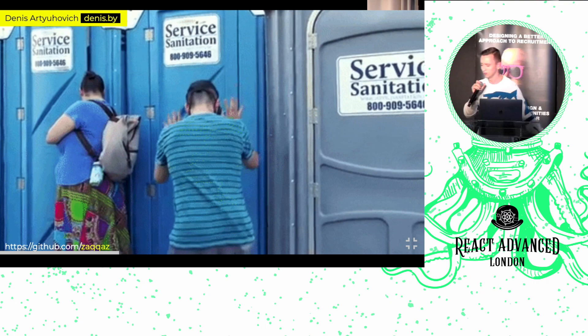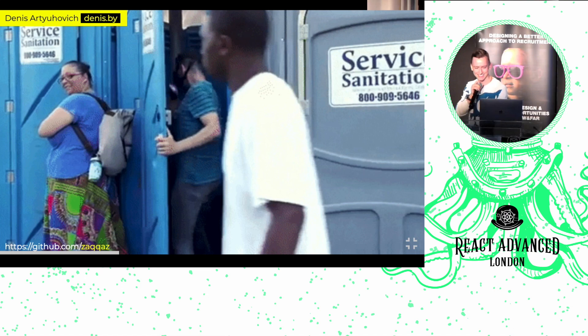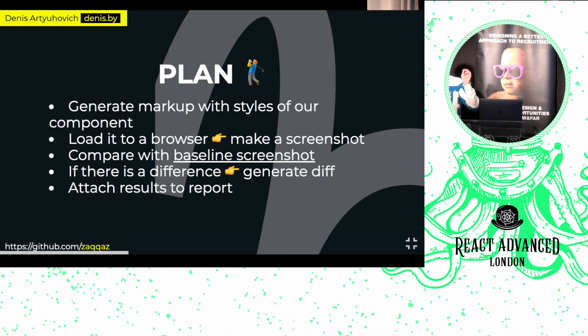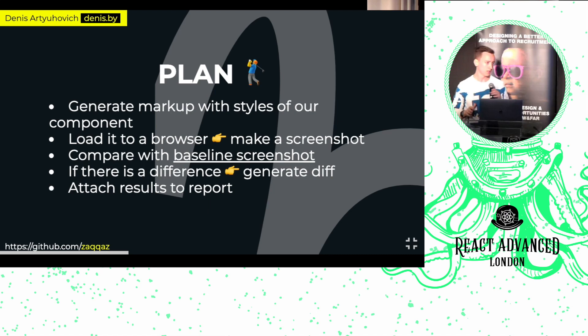But right now, to do something cool, we need to be prepared. So let's make a plan. In a common scenario, tests open the component in a predefined state and then take a screenshot. This requires developing the component such that the same input always produces the same output — basically like pure functions. We're going to generate markup with styles, load it to the browser, take a screenshot, compare it, and if there's a difference, generate a diff and add it back to the reporter.